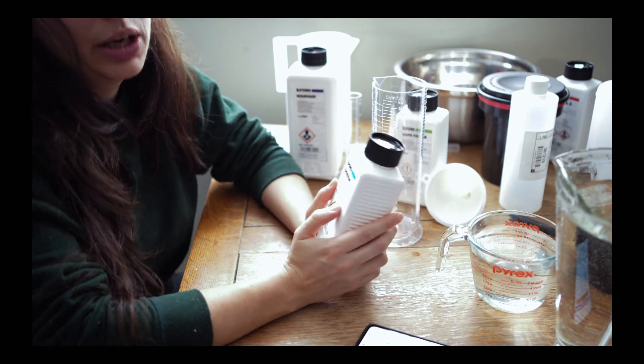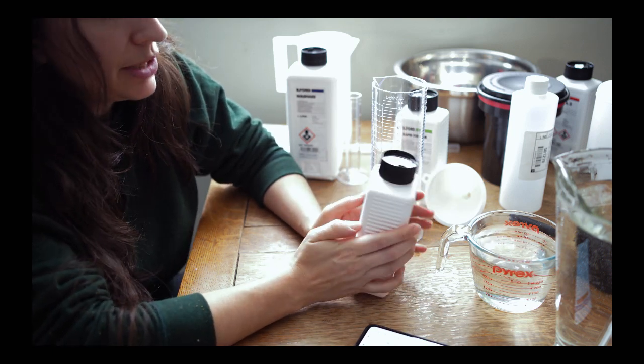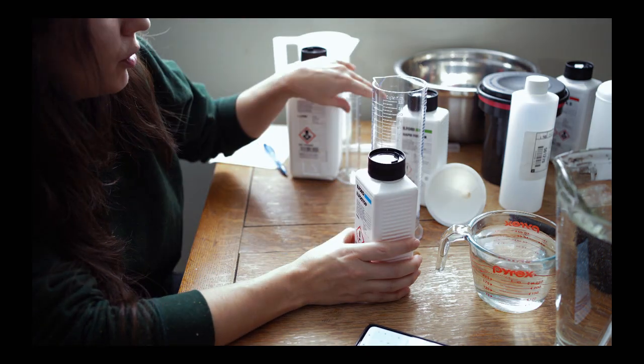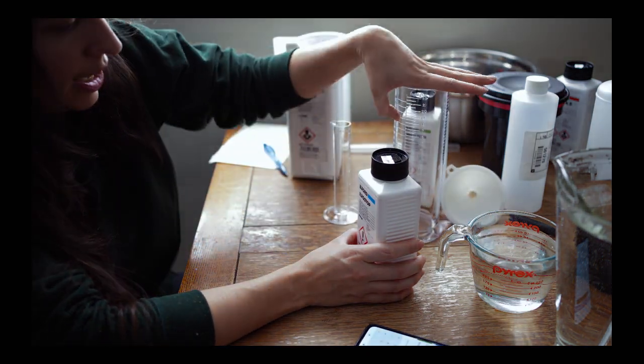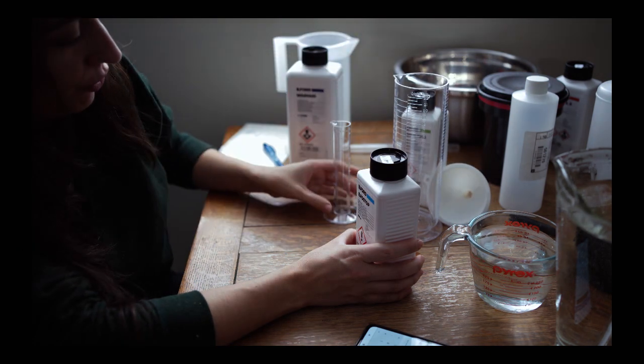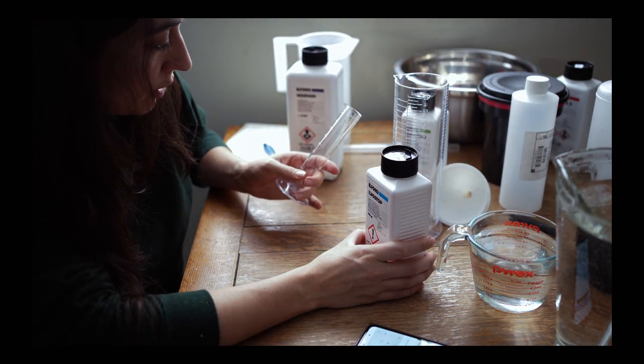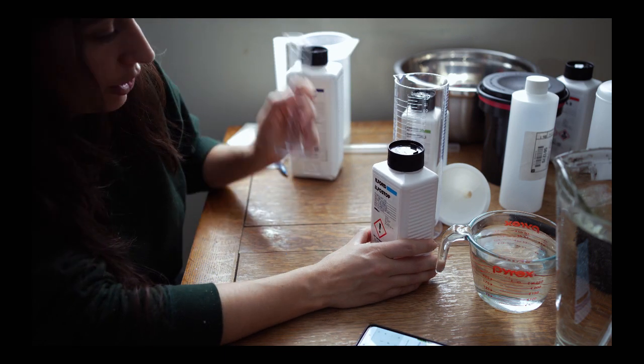For the stop bath, we want a 1 to 19 ratio. Which I believe means that if I were using a liter, I would want 50 milliliters. That's the mix. But I'm going to do 500 milliliters and then just do 25. Yeah, I think that's right. 25 milliliters of stop bath.